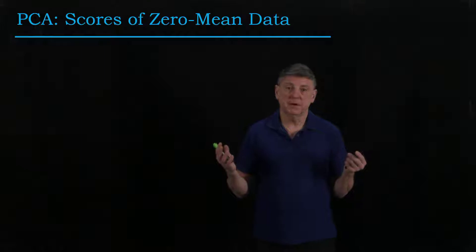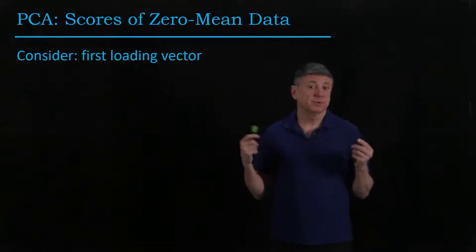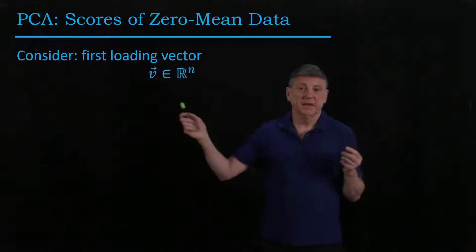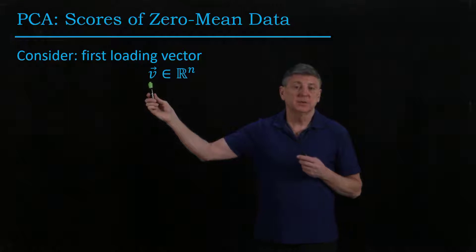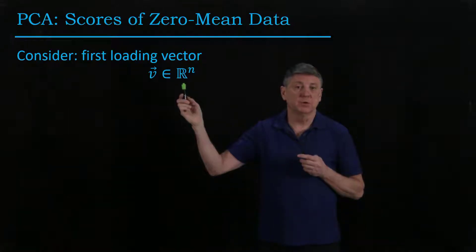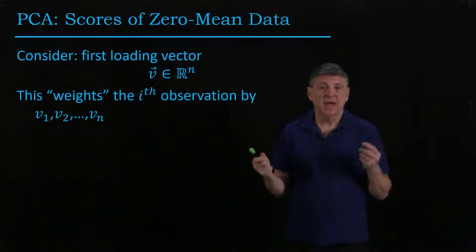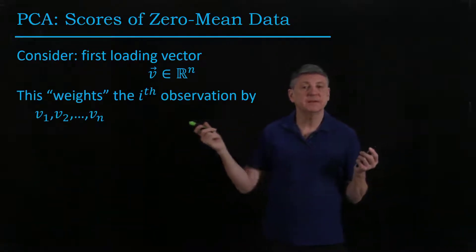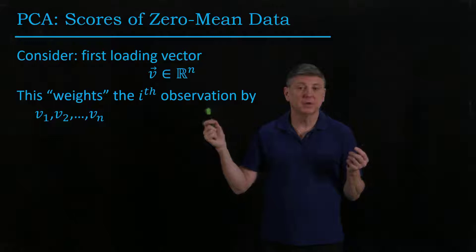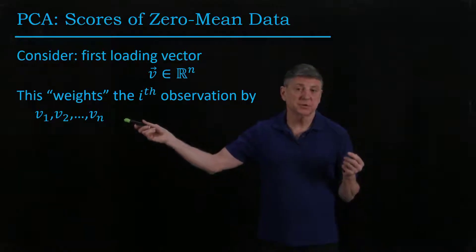Let's recall what we mean by PCA and scores. The first loading vector in PCA is the eigenvector associated with the largest eigenvalue of the covariance matrix. It effectively weights the ith zero mean observation by the numbers in the vector.